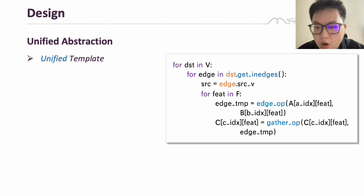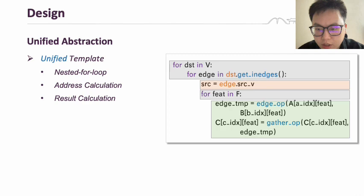We use a unified abstraction to solve the problem successfully. Our unified abstraction provides a common template that abstracts all graph operators. It contains three main parts: nested for loop, address calculation, and result calculation.